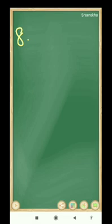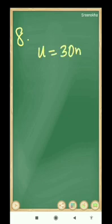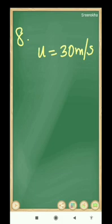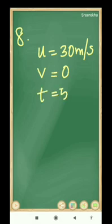A lorry traveling with a velocity of 30 meter per second came to rest in 5 seconds. What is its acceleration? First we have to write the data given. Initial velocity u is equal to 30 meter per second — that is the velocity the lorry was traveling. The lorry came to rest in 5 seconds, meaning it stopped, so the final velocity is 0.